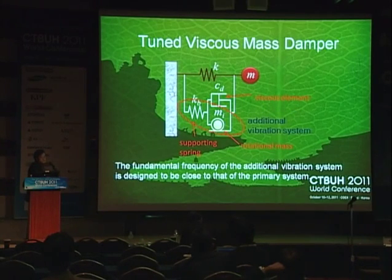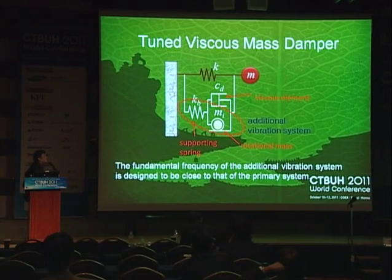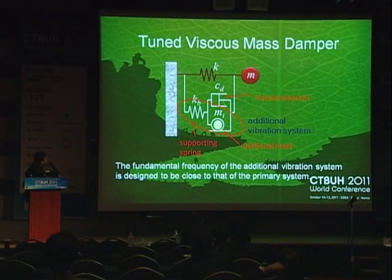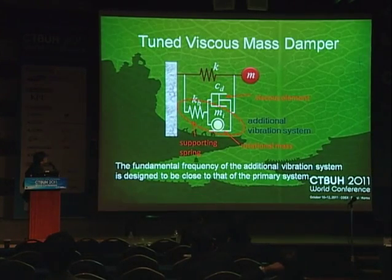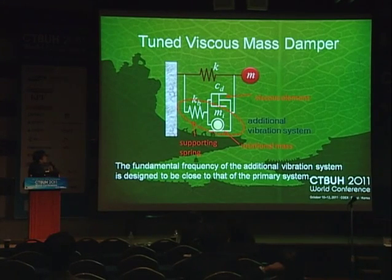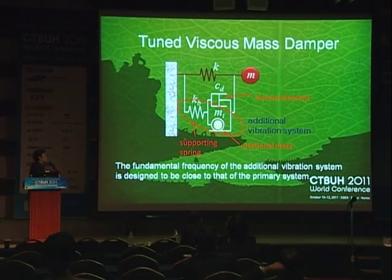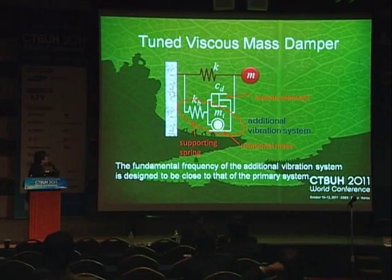This shows the configuration of the tuned viscous mass damper system. The tuned viscous mass damper is configured in parallel to the primary system. In the tuned viscous mass damper, the dashpot and the rotational mass are in parallel, and they are connected by a soft spring to the primary system. This rotational mass is activated by the interstory motion, not by the ground motion — if a very large mass were activated by the ground motion, it might cause a big problem.